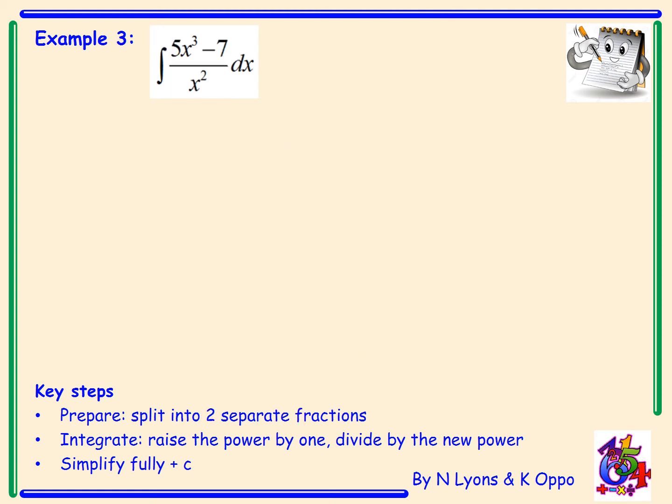Example 3. I've got now the integral of 5x cubed minus 7 all divided by x squared with respect to x, so we're now starting to look at algebraic fractions. The key steps say to prepare we're going to have to split this into two separate fractions, simplify as much as possible and then we can integrate.